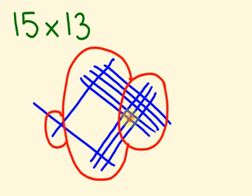We have 1, 2, 3, 4, 5, 6, 7, 8, 9, 10, 11, 12, 13, 14, 15 there. Carry the 1. 1, 2, 3, 4, 5, 6, 7, 8, plus 1 is 9. And that 1 there is 195.